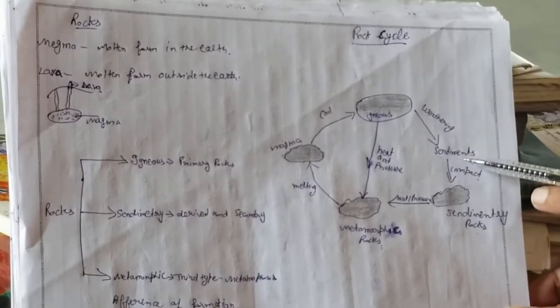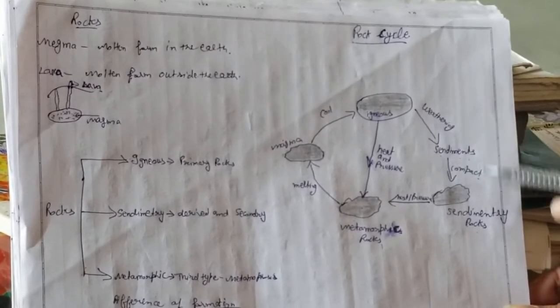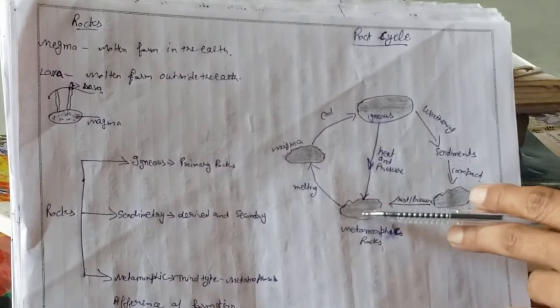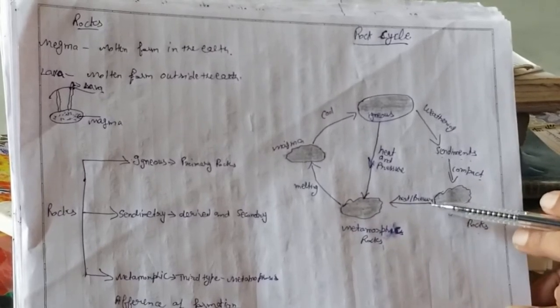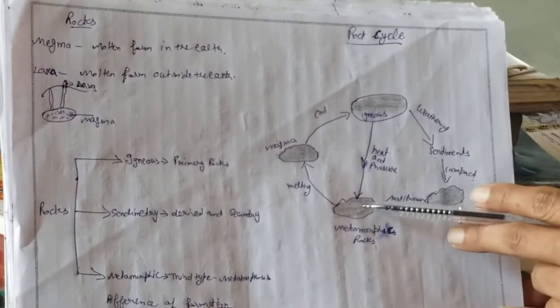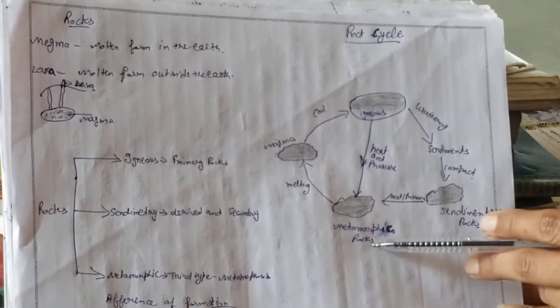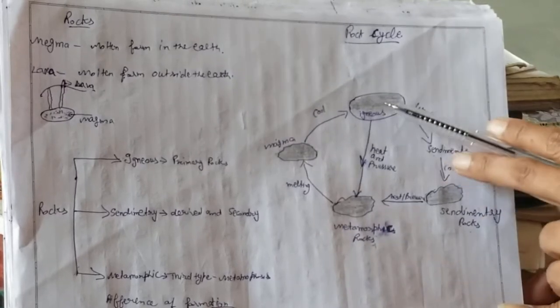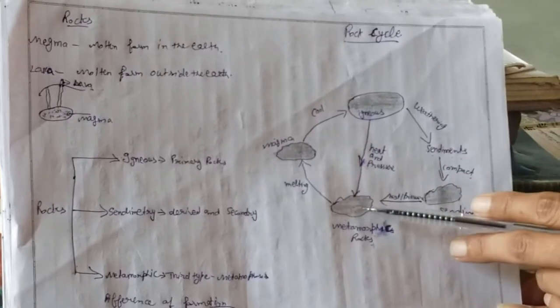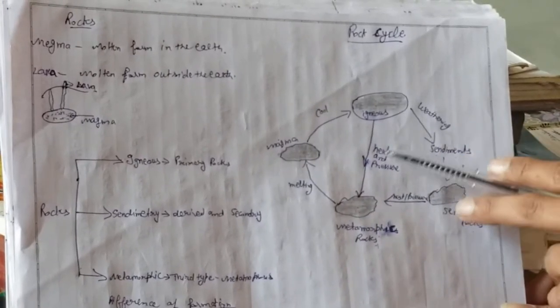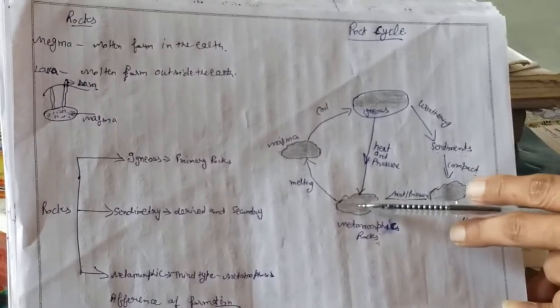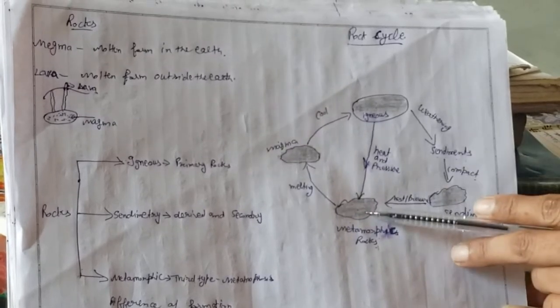Sedimentary rocks become metamorphic rocks when heat comes. With the help of heat and pressure, sedimentary rock becomes metamorphic rock, and igneous rock also becomes metamorphic rock.